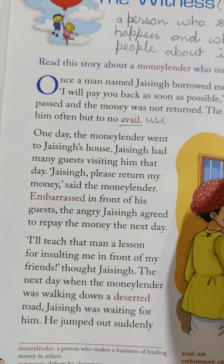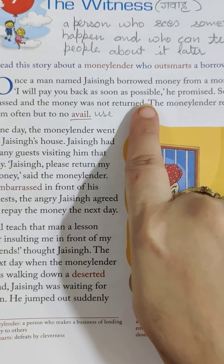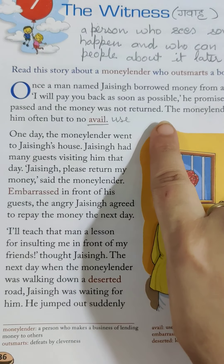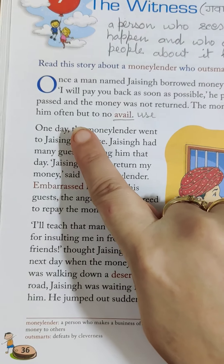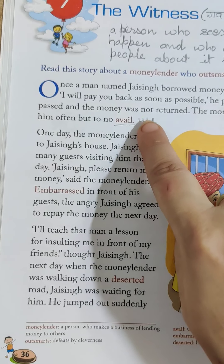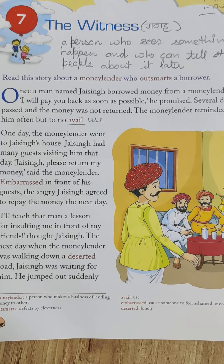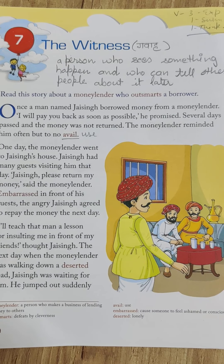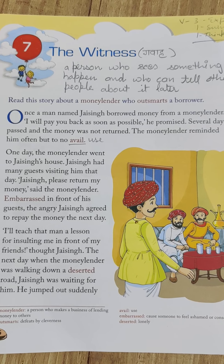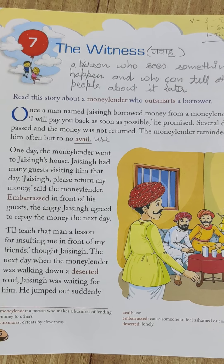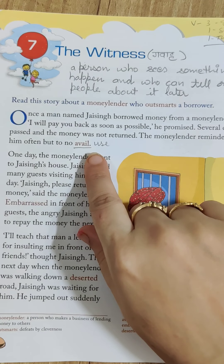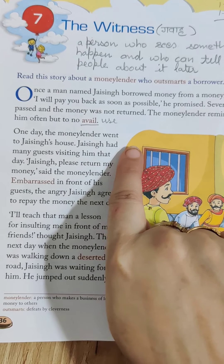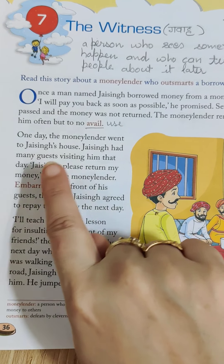Once a man named Jaising — underline this word — borrowed money from a moneylender. 'I will pay you back as soon as possible,' he promised. Several days passed and the money was not returned. The moneylender reminded him often, but to no avail. Avail means of no use — he did not pay the money.